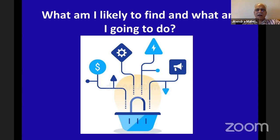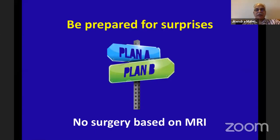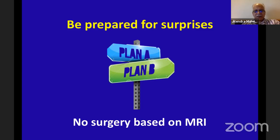In simple language: what am I likely to find in this patient and what am I going to do? I should be almost 90% correct — 10% scope for surprise is always there. Be prepared for surprises. There is absolutely no scope for surgery based only on MRI. Very often my approach changes when I examine the patient and take history — MRI is frequently wrongly reported, and how a lesion affects the patient is the most important consideration.